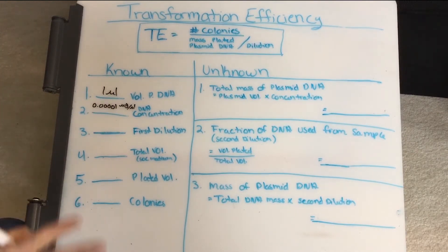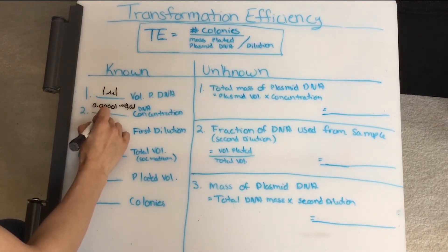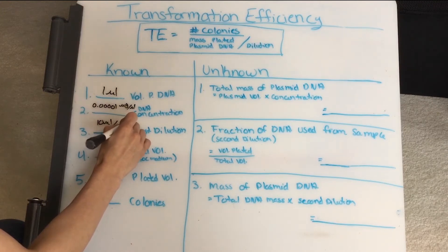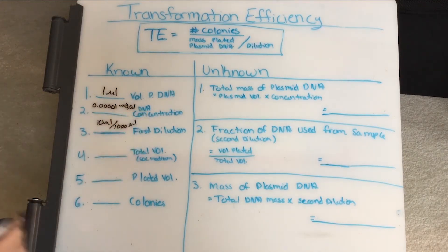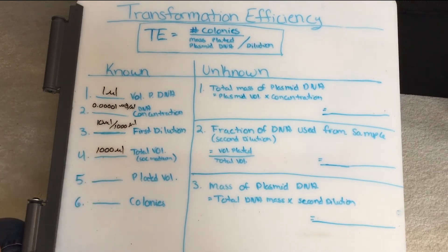So we're going to look at that in terms of the amount we pulled out and our total volume. So that is 10 microliters over 1000 microliters. Then our total volume that we've been using is 1000 microliters, and our plated volume is 50 microliters. And at the end, after incubation, we counted 95 colonies.